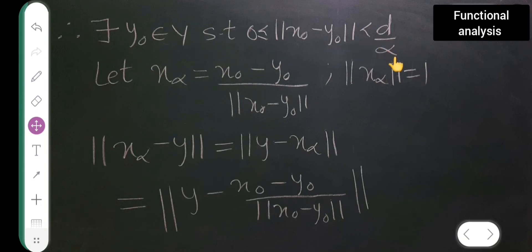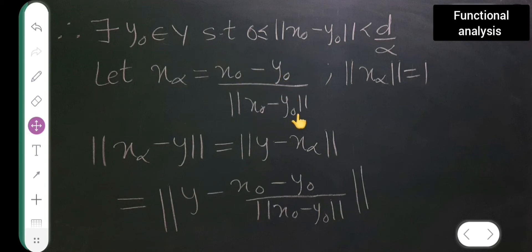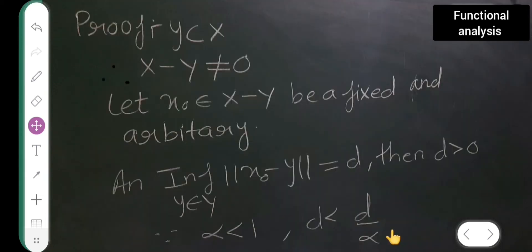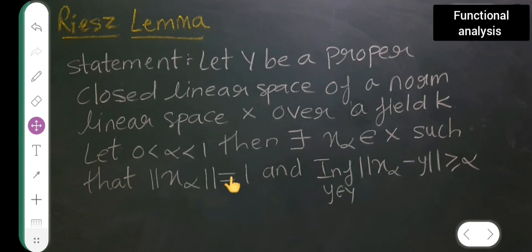Now, define x_α as equal to x₀ minus y₀ upon the norm of x₀ minus y₀. The norm of x_α is equal to 1, as required by the statement.